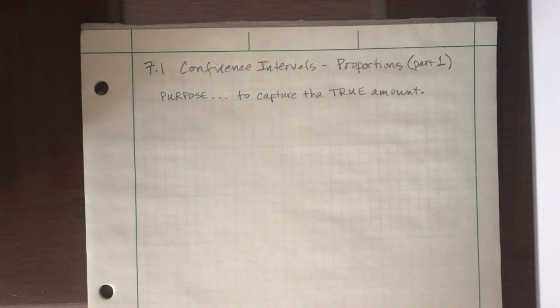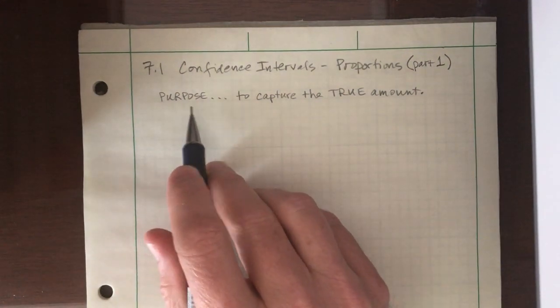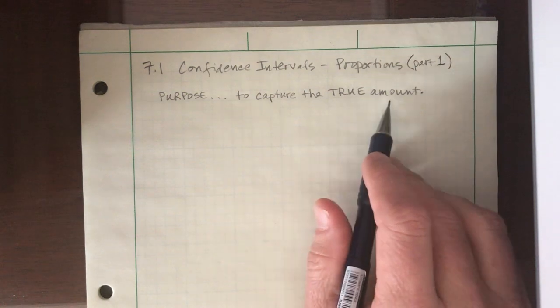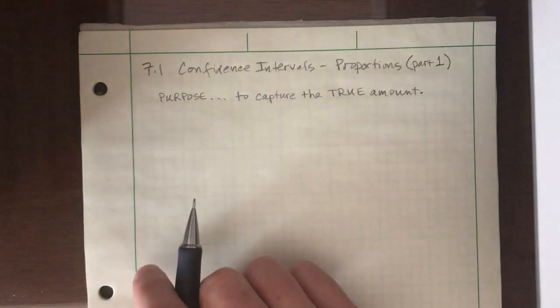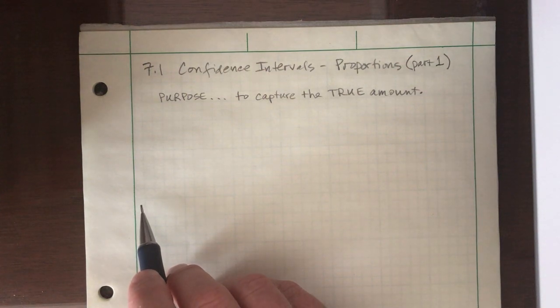Like I said in the introductory video, always remember the purpose of a confidence interval is to capture some true amount in a population. So in 7.1, this amount we're talking about is a true proportion or a true percentage.